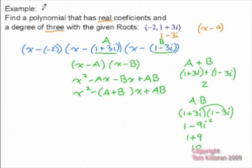So when I come back to the problem, I can rewrite it as (x plus 2) times (x squared minus (A plus B)x plus AB), and A plus B was just 2, so we're going to get 2x, plus A times B, which was 10.